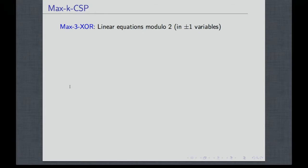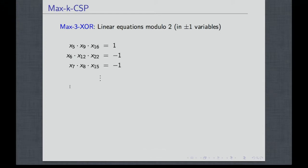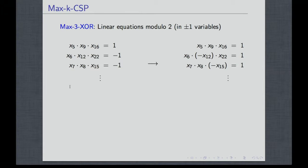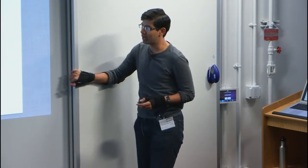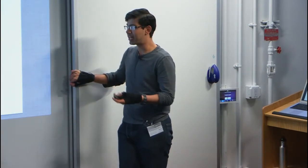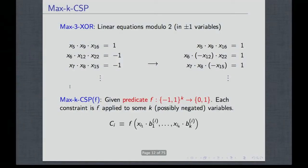Let me just set up some notation, and let me define 3XOR in plus-minus-one variables. So you have variables which are supposed to be plus or minus one, and you have some constraints on their products of some three tuples. You can write it in a way that the right-hand side is the same for all of them, and some variables have been multiplied by a negative sign. In general, if you are given some predicate which takes k plus-or-minus-one variables and outputs zero or one, you can think of each constraint as this predicate f applied to a k-tuple of variables, some of them possibly negated. We'll denote whether the variable is negated or not by a sign b sub 1i for the i-th constraint. This is the notation — fairly standard.